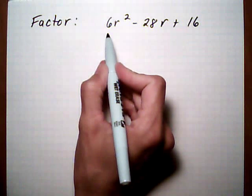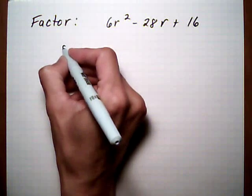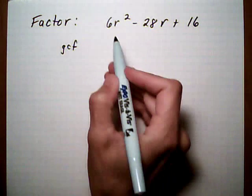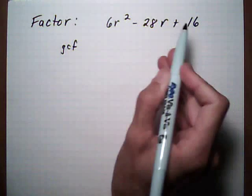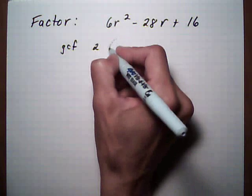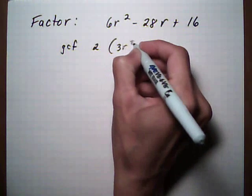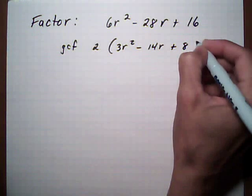The first thing you want to look at any time you're factoring is try to take out a GCF. For this we've got 6, 28, and 16, so all of these have a 2 as a common factor. We're going to pull out the GCF of 2 and we're left with 3r squared minus 14r plus 8.